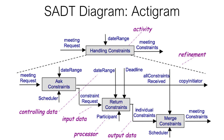For example, as seen here, 'return constraints' has 'constraint request' as input, 'individual constraints' as output, then 'date range' and 'deadline' control the data, and 'participant' is the processing component. Overall, this is decomposing the larger activity of handling constraints. We know from the main activity that a meeting request comes in and meeting constraints need to come out — that is what is being described in the three sub-tasks listed here.